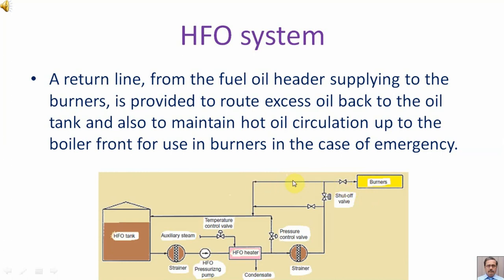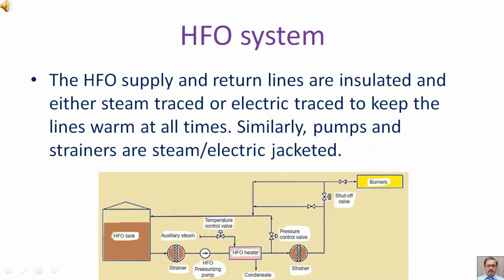The HFO return line is provided to route excess oil back to the oil tank and also to maintain hot oil circulation up to the boiler front for use in burners in case of emergency. The HFO supply and return lines are insulated and fitted with either steam tracing or electric tracing to keep the lines warm at all times. Similarly, pumps and strainers are steam or electric jacketed.